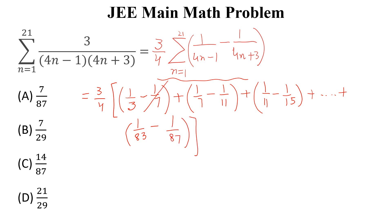Minus 1 over 7 will be cancelled with this, minus 1 over 11 will be cancelled with this, and similarly this will be cancelled in the next term up to here. So we can write 3 by 4 into (1 by 3 minus 1 by 87). If we simplify this, this is equal to 3 by 4 into 28 divided by 87.